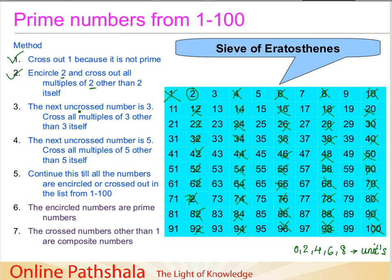The third step says to go to the next uncrossed number and cross all multiples of 3 other than 3 itself. So this is the number 3. We go through the multiples: 9, then 15, then 21, 27, 33, 39. Then 42 is already crossed out. 45 — yes, 3 times 15 is 45, so we can cross it out.